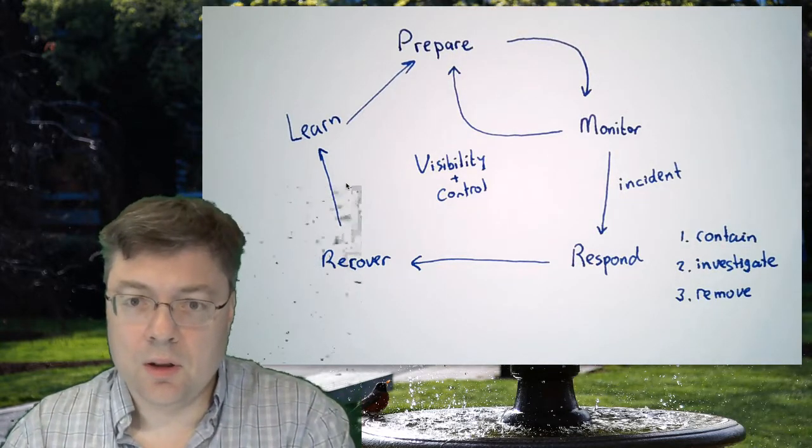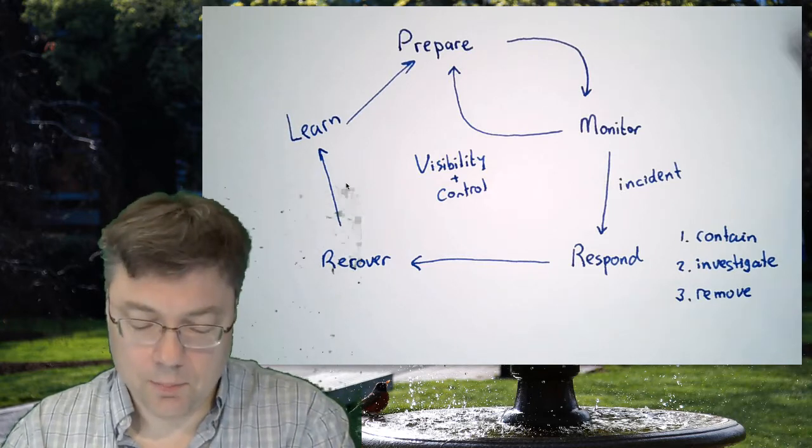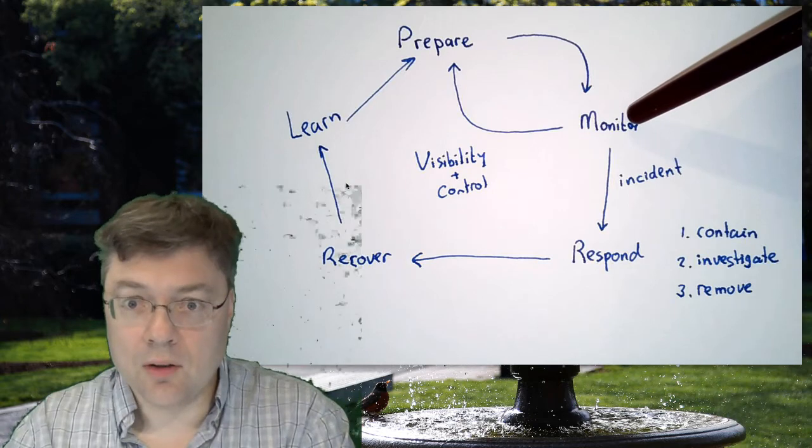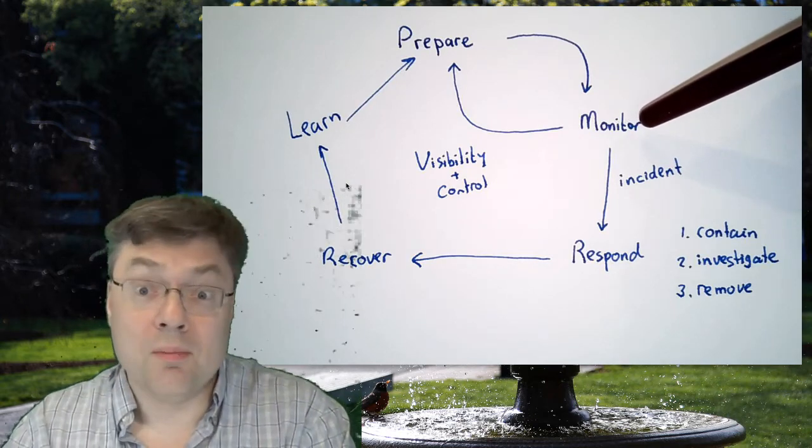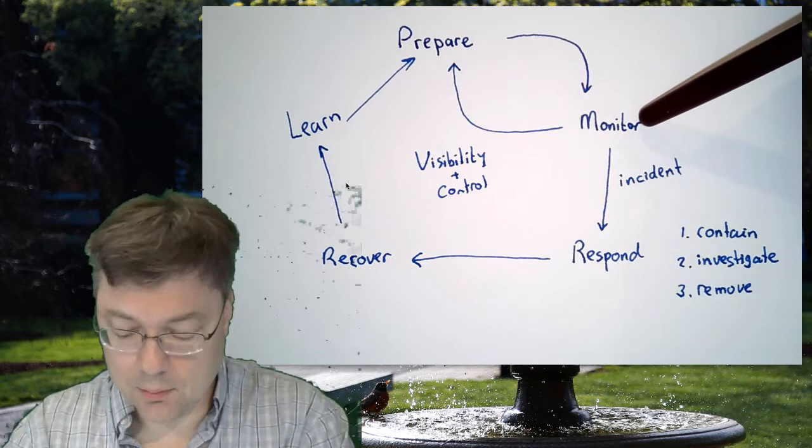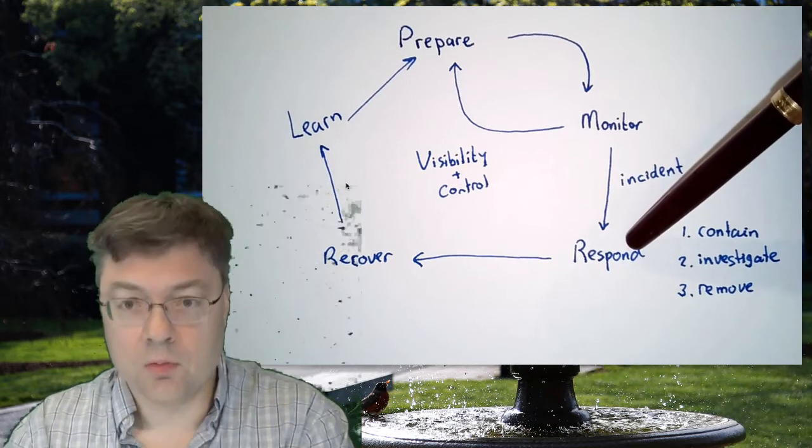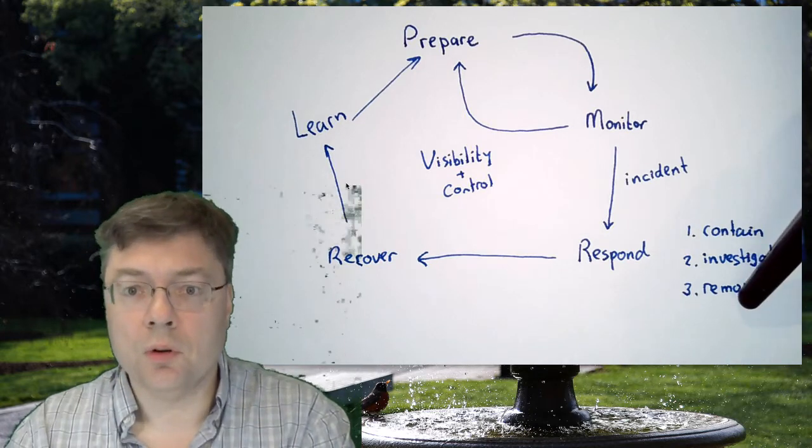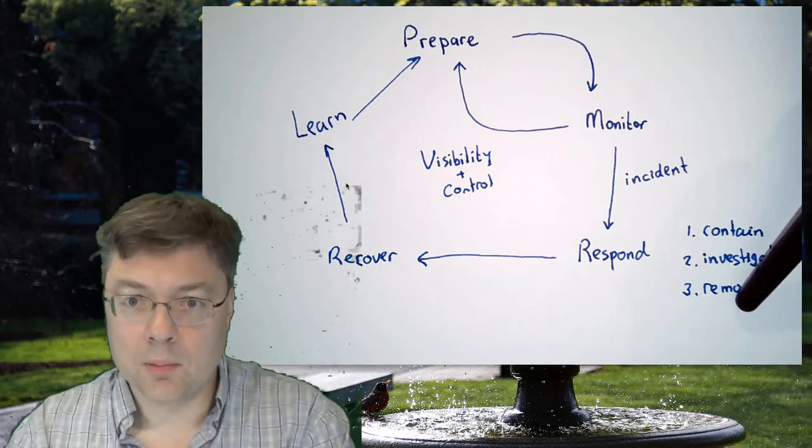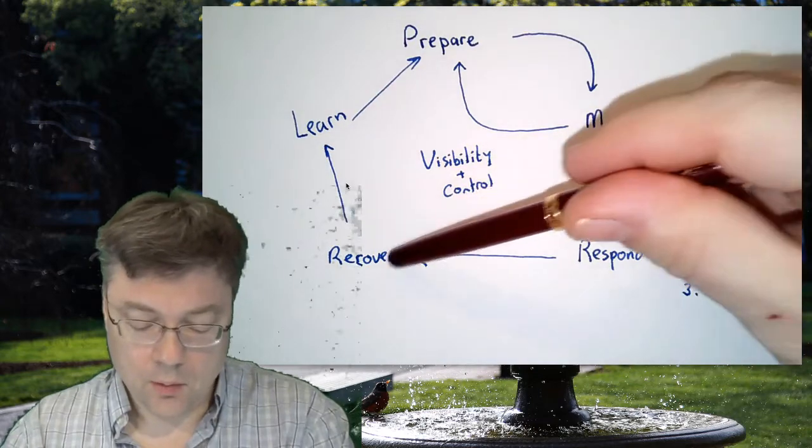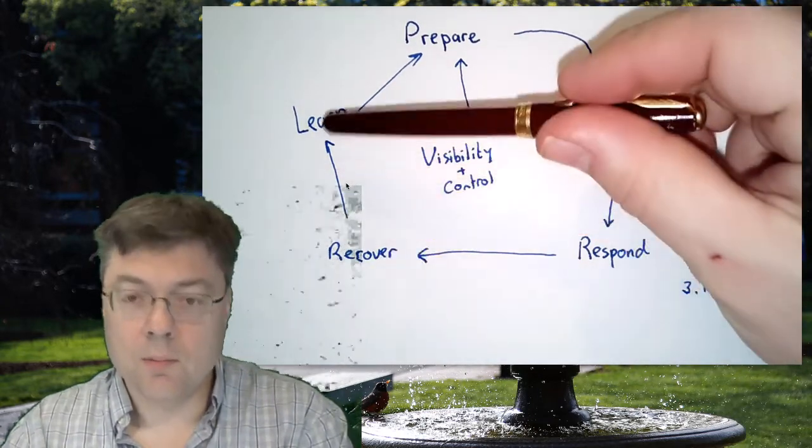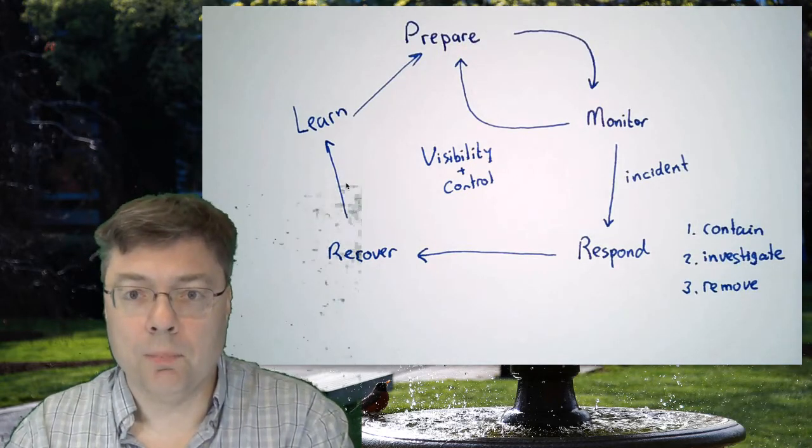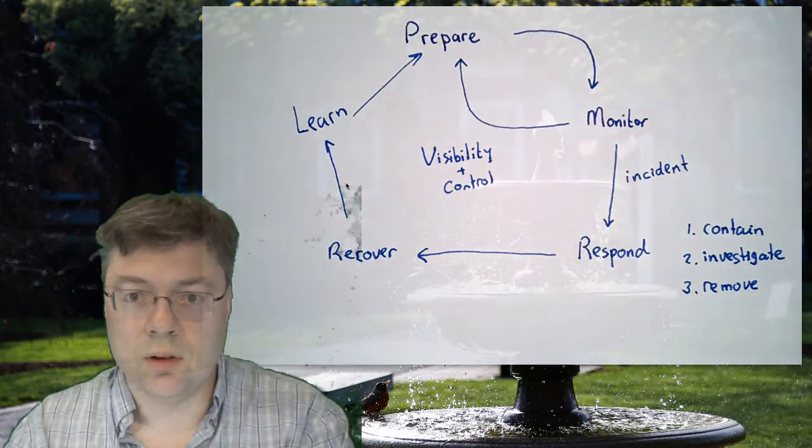But these are the basic activities in the cyber defense cycle. We prepare for what could happen. We look at seeing what is actually happening. If something bad happens, or it might seem that something bad happens, we have an incident that we need to respond to. A response contains containment, investigation and removal of artifacts left behind by an attacker. We recover the system back to a production-ready state. We learn from our lessons, and we use that to create new preparation. That is the basic cyber defense cycle.